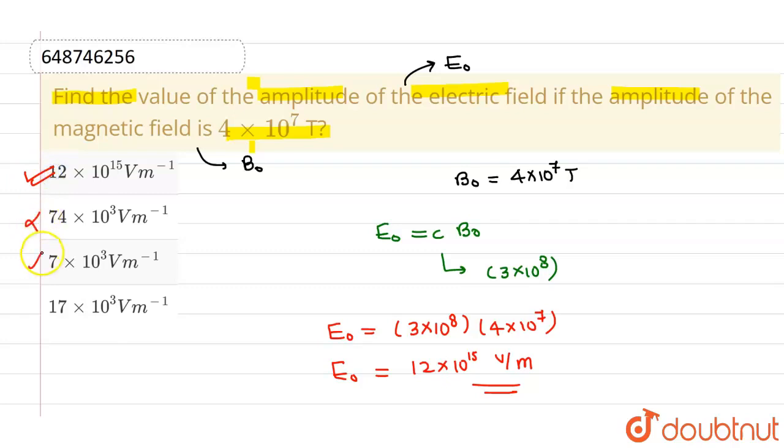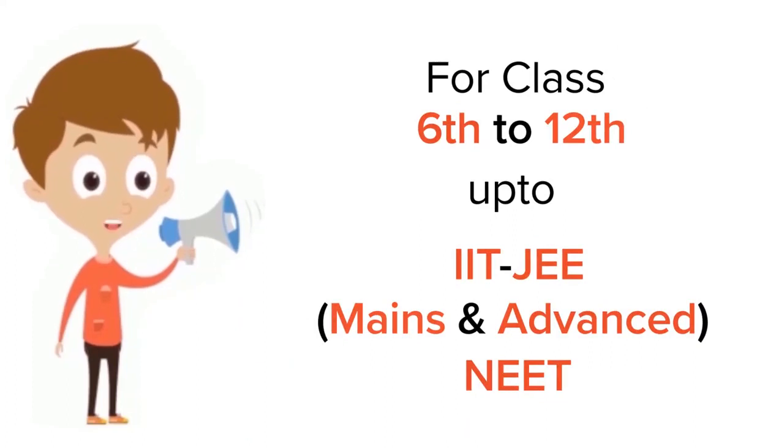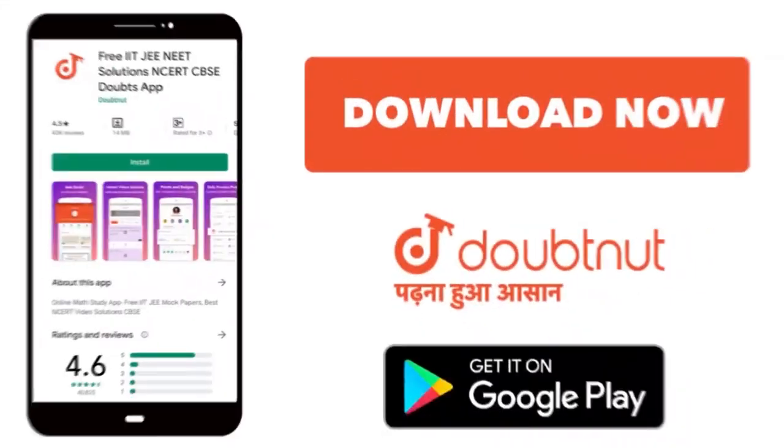So this is our answer which is given in option 1. Option 1 is correct and rest all options are incorrect. I hope you understood. Thank you. For class 6 to 12, IIT-JEE and NEET level, trusted by more than 5 crore students. Download Doubtnut app today.